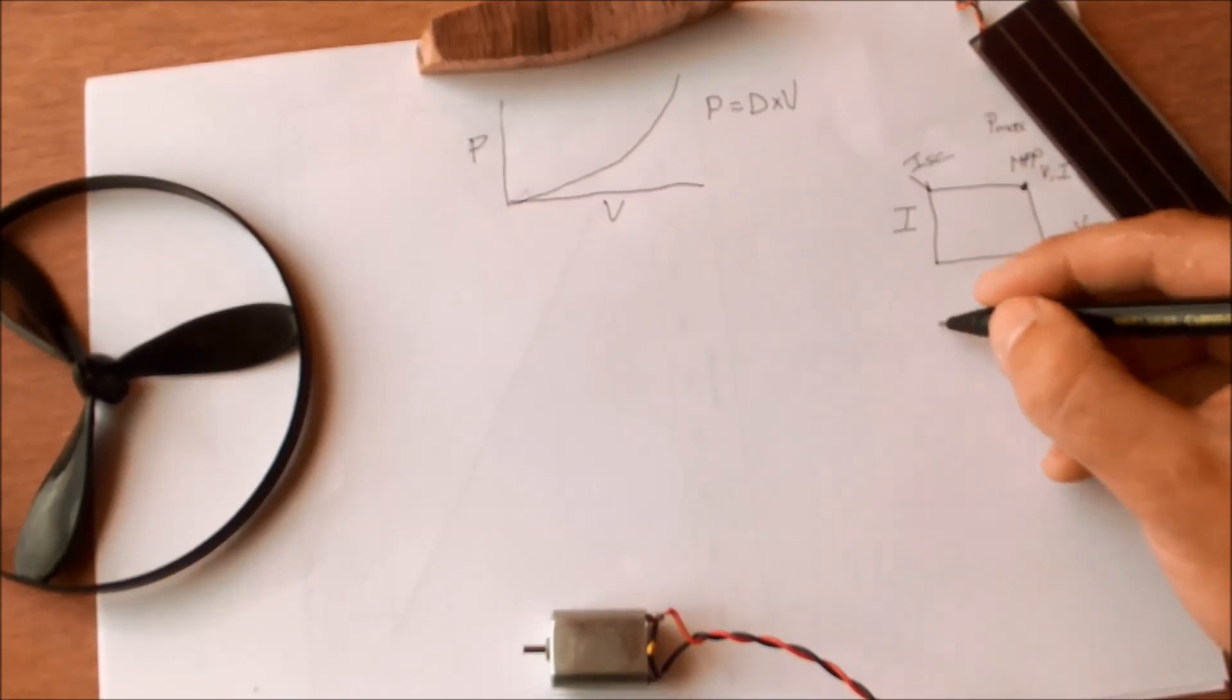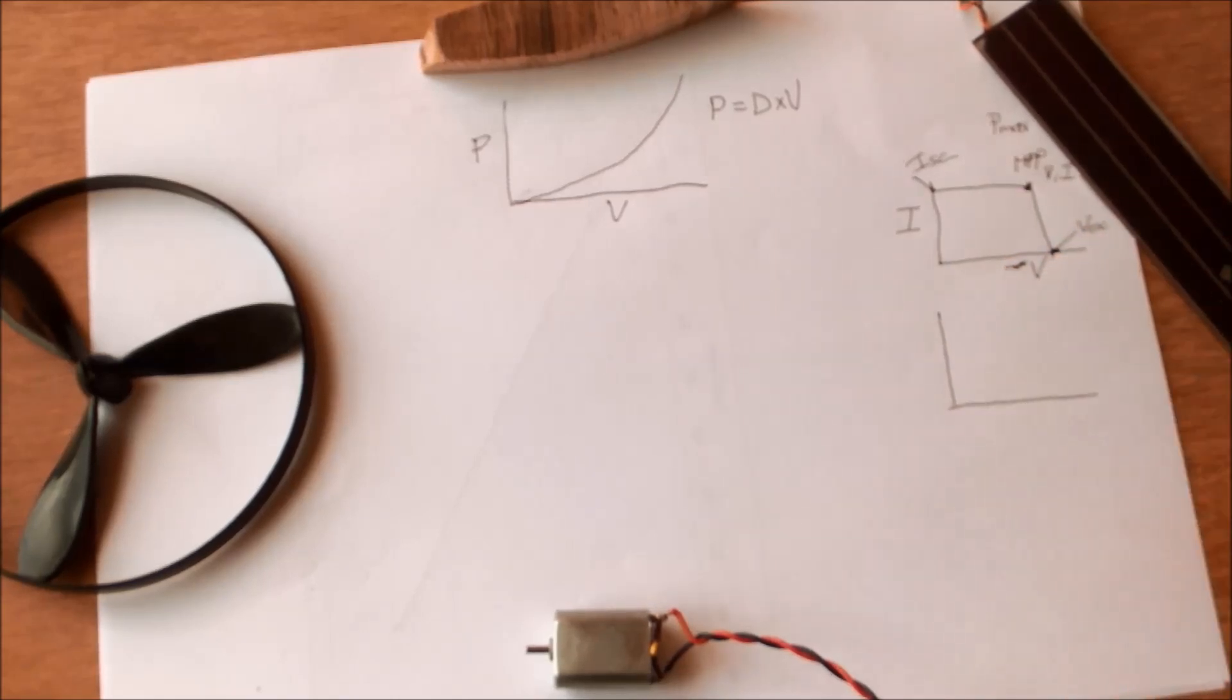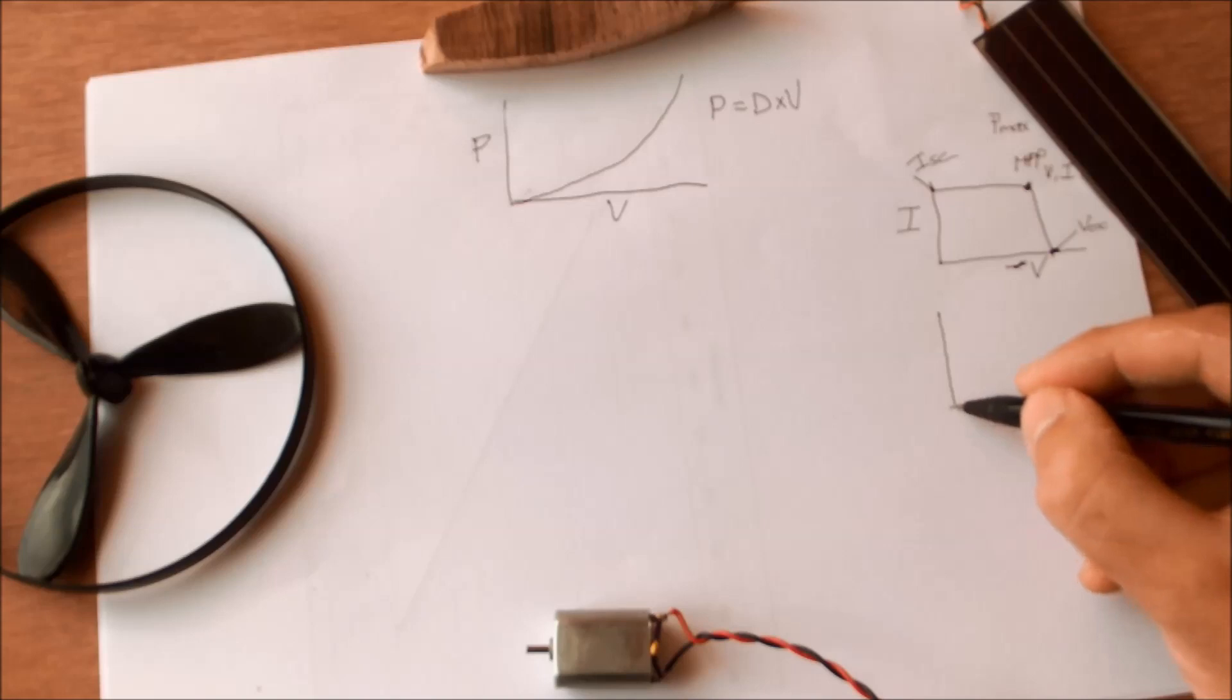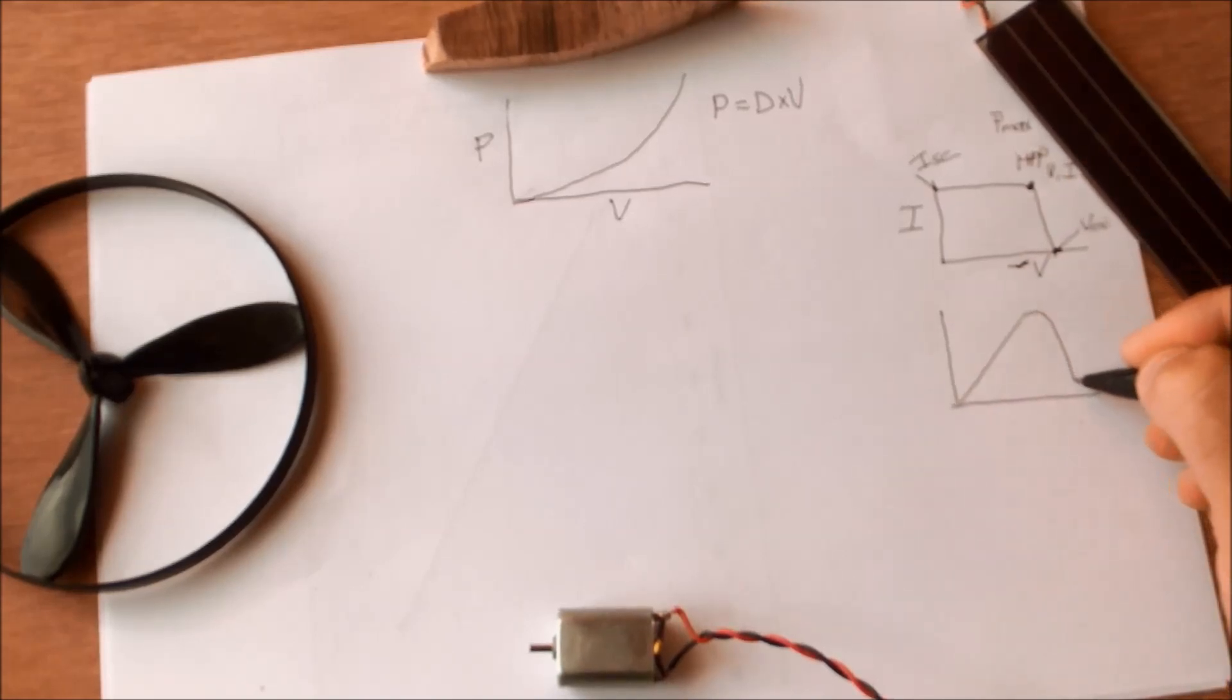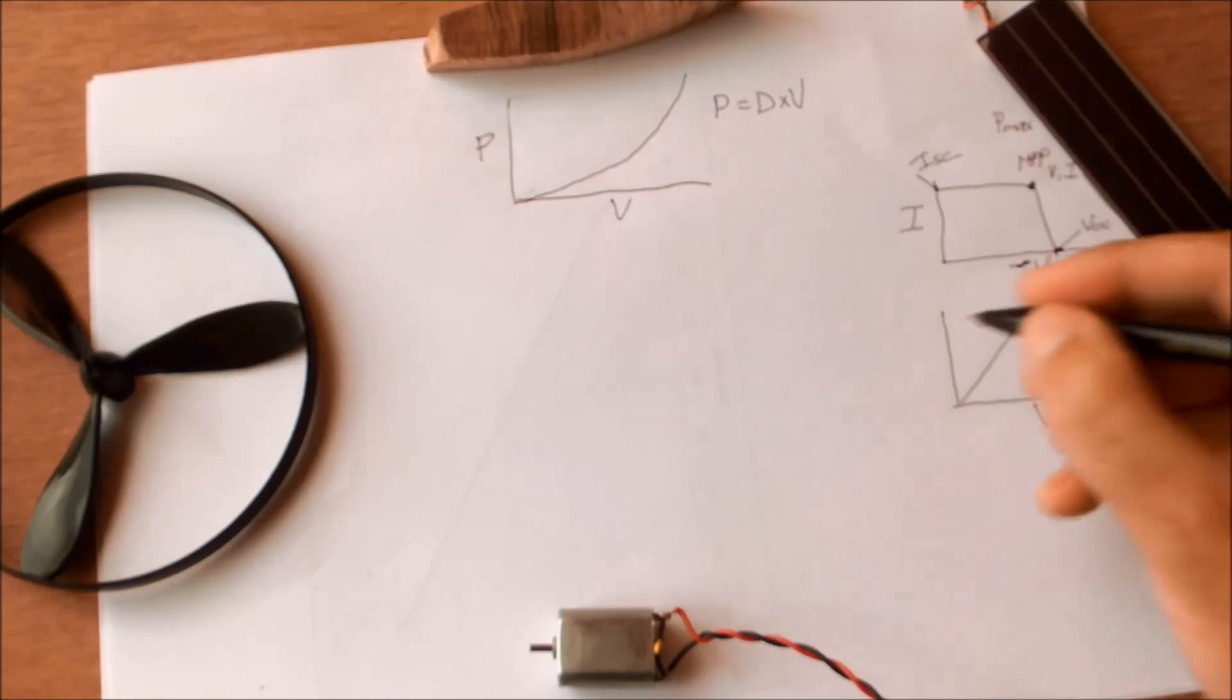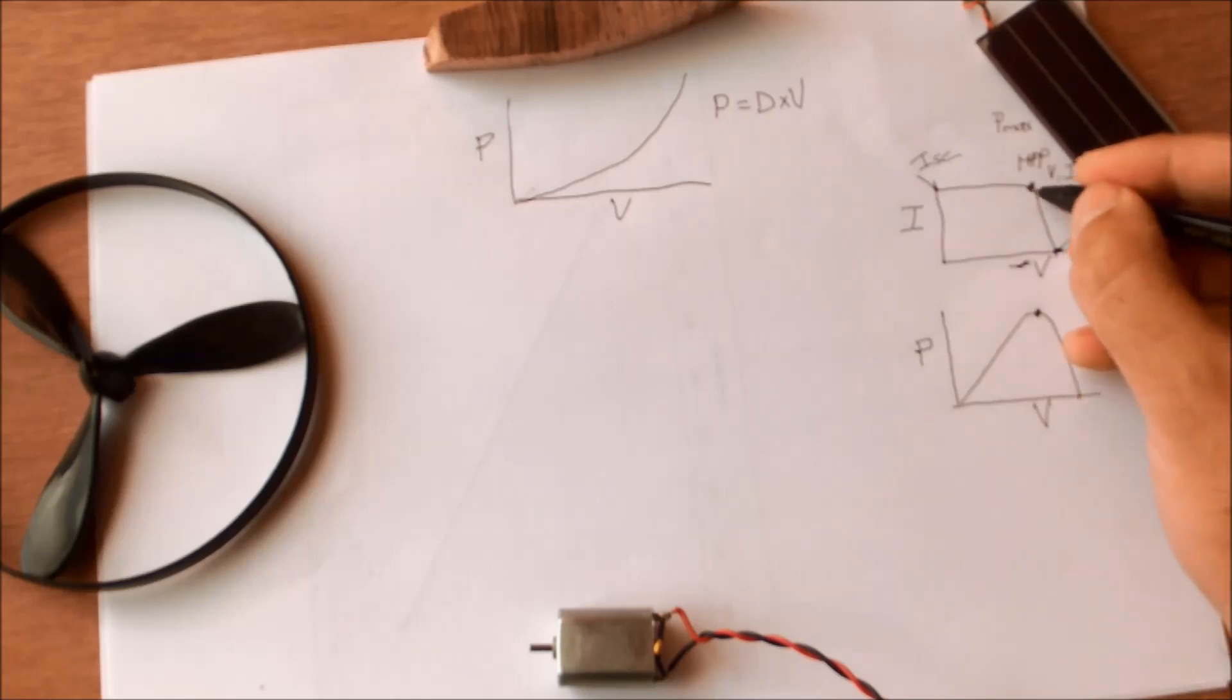The solar panel can then further be represented by a power curve which would look something like that. Once again voltage, power and that point there would correspond to the maximum power point over there.